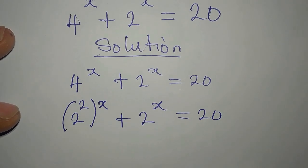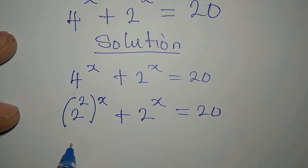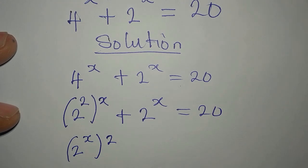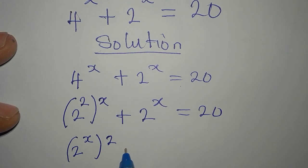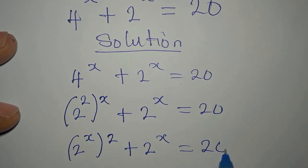Now, what again can I do? I can always change what I have here. So I have 2 to the power of x to the power of 2, because I am to multiply. And then I have 2 to the power of x, which is equal to 20.